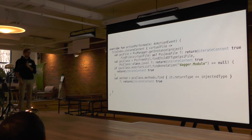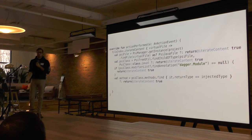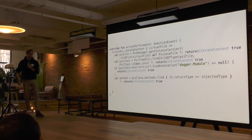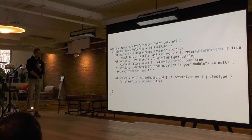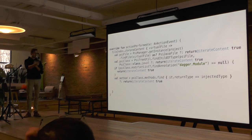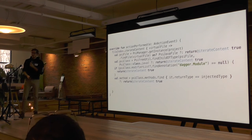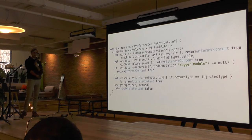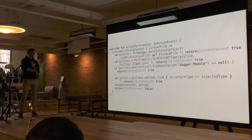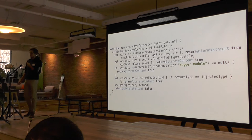Then we find the actual provider method. We look at the PSI class — which has a methods field containing all methods of the class — and call find on it, a collection function that iterates over a list and returns the first result matching a predicate. I want the first method where its return type matches the injected type. If we can't find it, we return true to continue iterating. Once we've found the method that provides the class, we navigate to it and return false to iterate content — we don't want to continue looking at more virtual files.